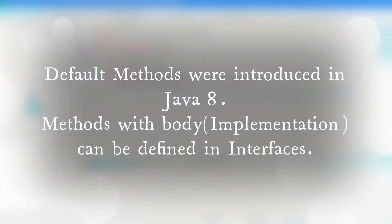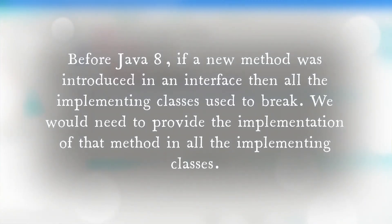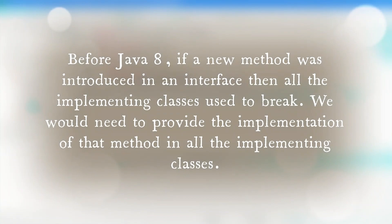So what are default methods? Before Java 8 we could only declare abstract methods in an interface. However, Java 8 introduced the concept of default methods. Default methods are the methods that can have a body. The most important use of default methods in interfaces is to provide additional functionality to a given type without breaking down the implementing classes. Before Java 8, if a new method was introduced in any interface then all the implementing classes used to break because they need to provide the implementation of the newly added method. So that can be avoided using default methods in Java 8.